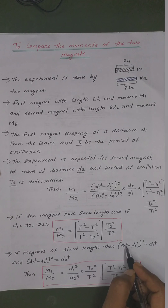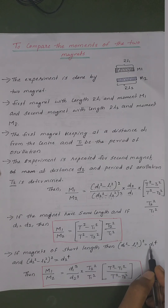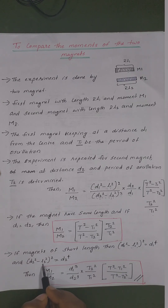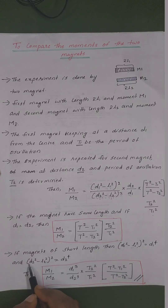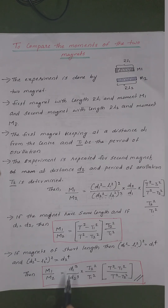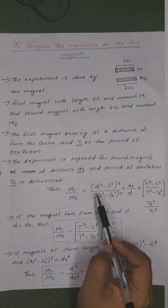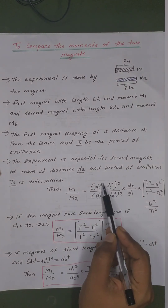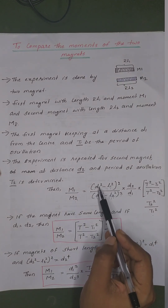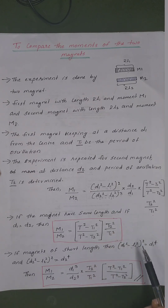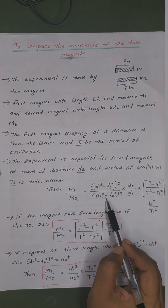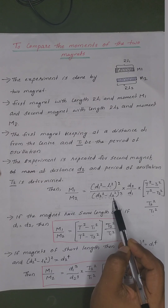Then the term D1 equals D1 raised to 4, and similarly D2 equals D2 raised to 4. On the other hand, D1 is equal to D2 raised to 4.